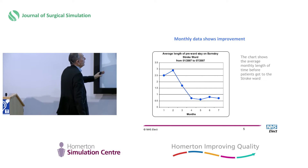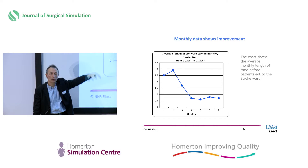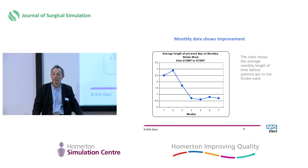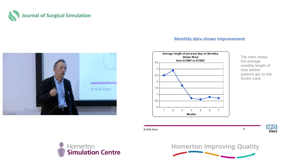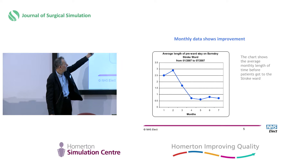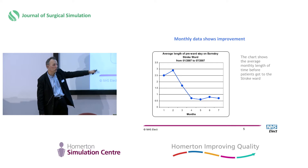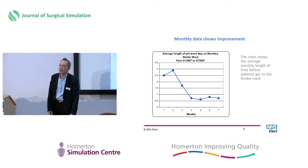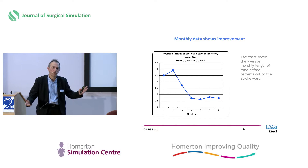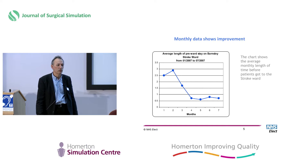The graph showed that in the first two months it was taking two and a half to three days on average to get to the stroke ward. Then in month three the average dropped to about a day and a half, and by month four it was down to less than a day and seemed to have stayed there. There's not a lot of data on that graph but at face value it looks as if something has changed.